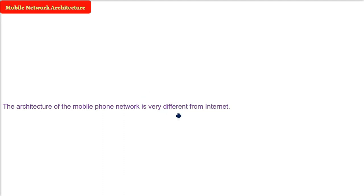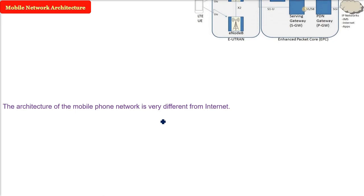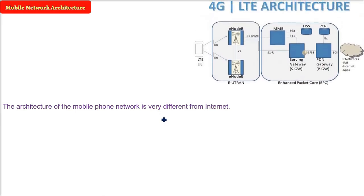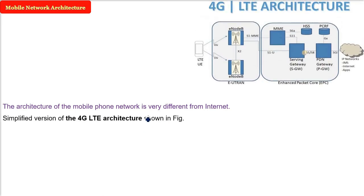But the architecture of the mobile phone network has changed. The names have changed from 1G all the way to 5G. This picture shows a very simplified version of the 4th generation Long Term Evolution (LTE) architecture.